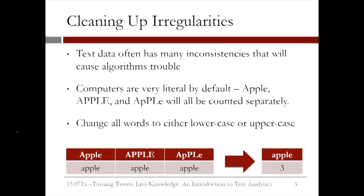One part of pre-processing the text is to clean up irregularities. Text data often has many inconsistencies that will cause algorithms trouble. Computers are very literal by default. 'Apple' with just an uppercase A, 'APPLE' all in uppercase letters, or 'Apple' with a mixture of uppercase and lowercase letters will all be counted separately. We want to change the text so that all three versions of Apple will be counted as the same word.